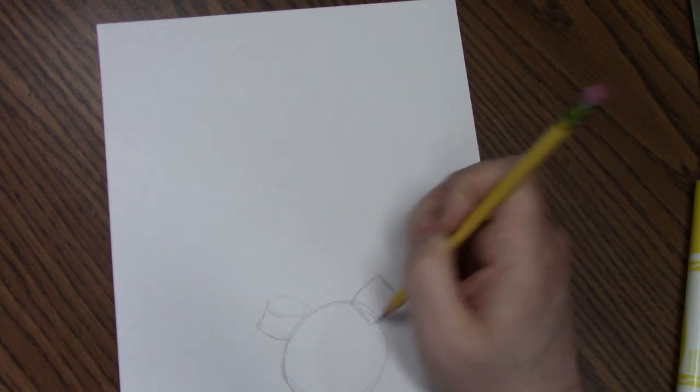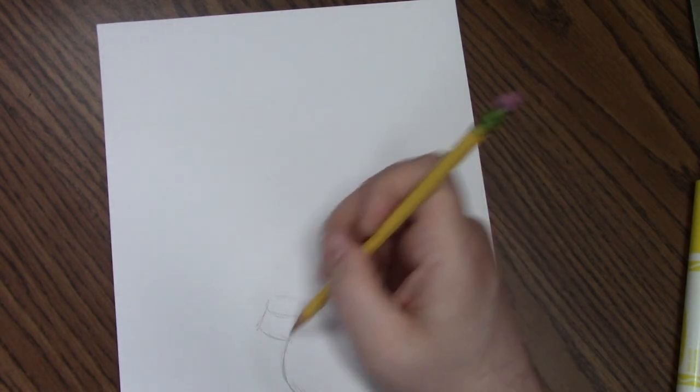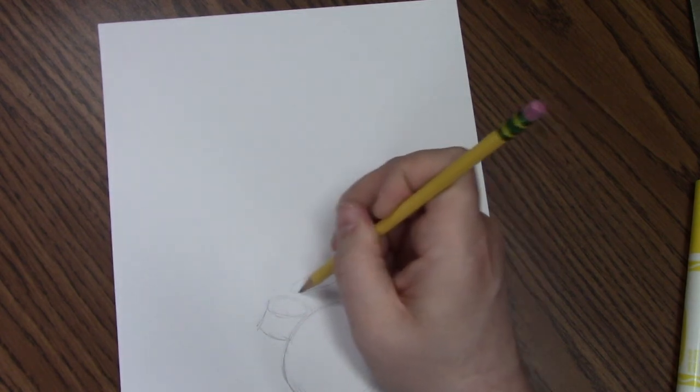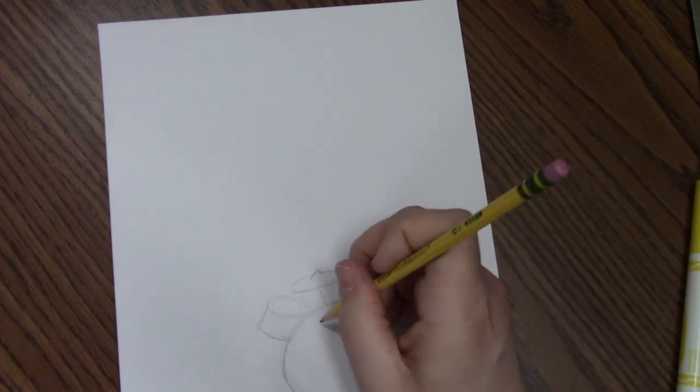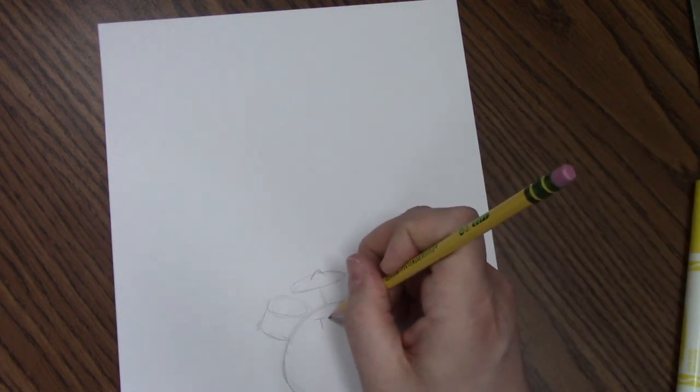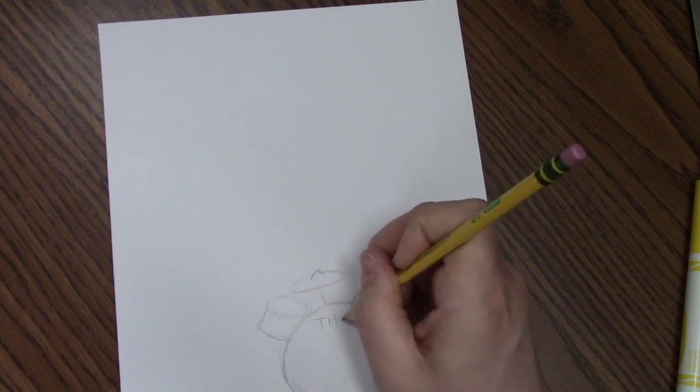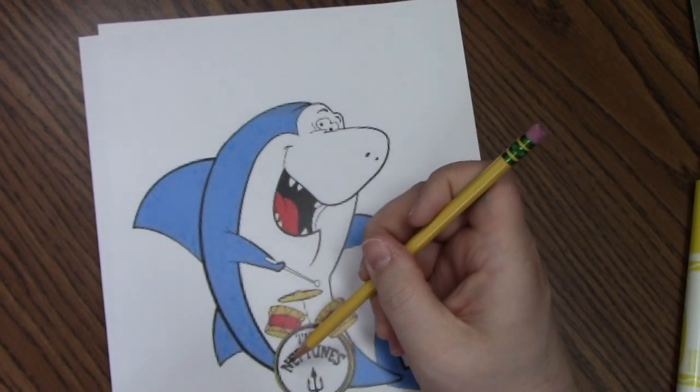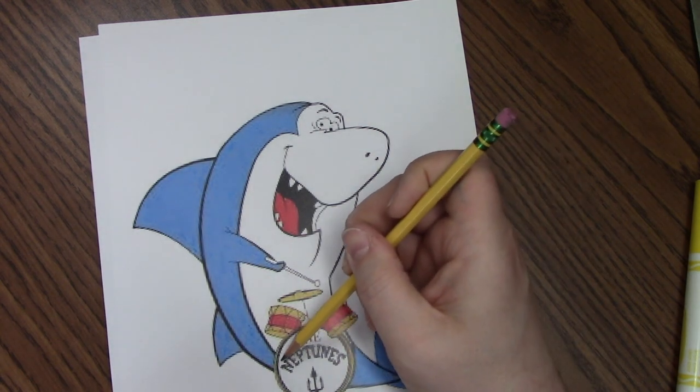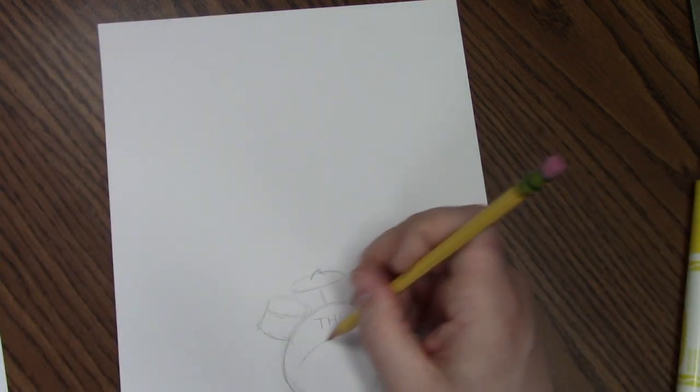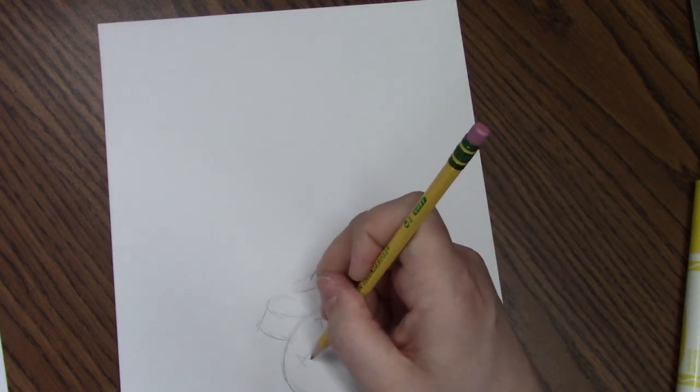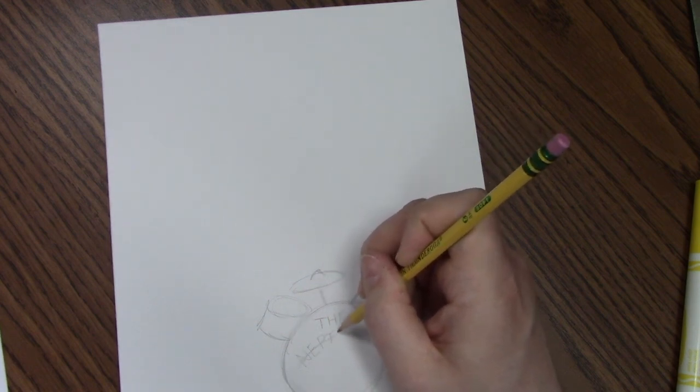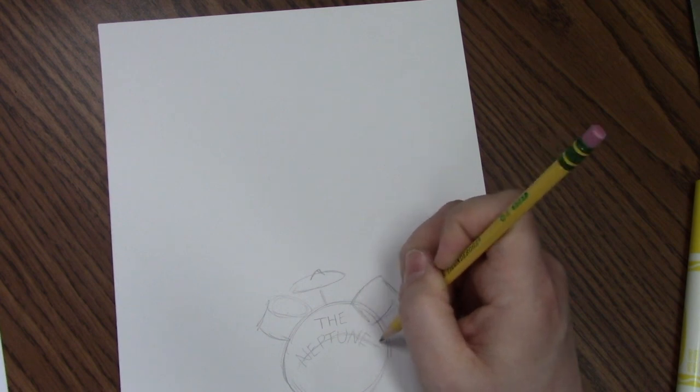So this drum is going to be in front of the big circle. This drum is going to be behind the big circle. Then here's going to be the little symbol. I'm just going to put the letters in for the Neptunes. And that goes along. If we look at the reference photo, his drums say the Neptunes and it's in an arc this way. So I'm just going to draw the arc first and then write the letters on the arc.